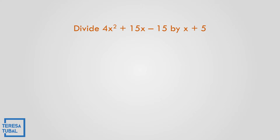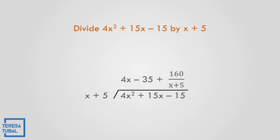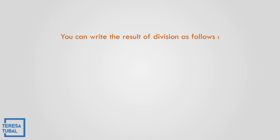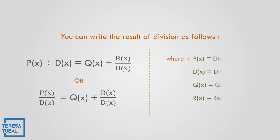We need to divide 4x squared plus 15x minus 15 by x plus 5. The parts are: x plus 5 is the divisor, 4x squared plus 15x minus 15 is the dividend, and the result is the quotient. We can write the result as: P(x) divided by D(x) equals Q(x) plus R(x) over D(x), where P(x) is the dividend, D(x) is the divisor, Q(x) is the quotient, and R(x) is the remainder.